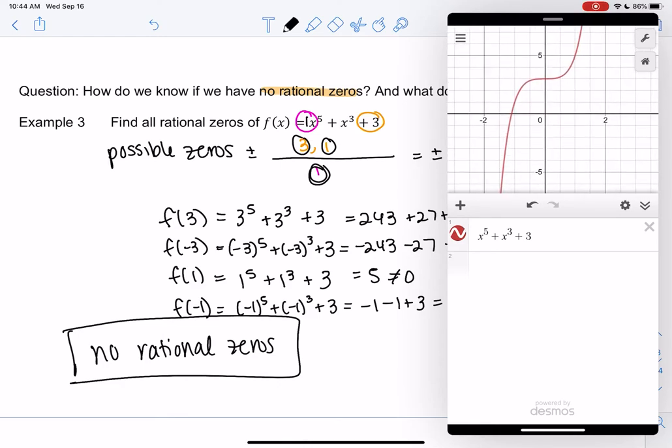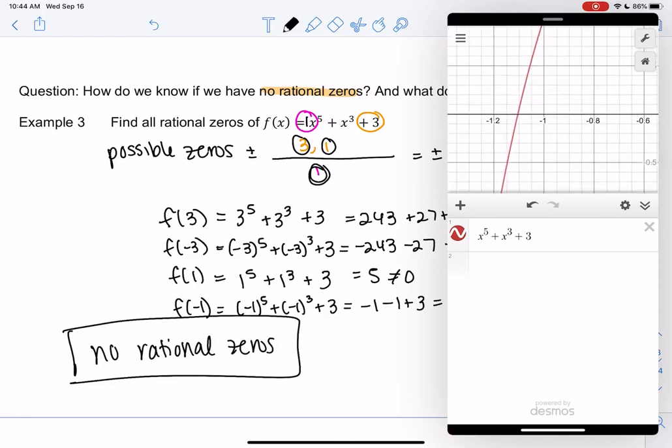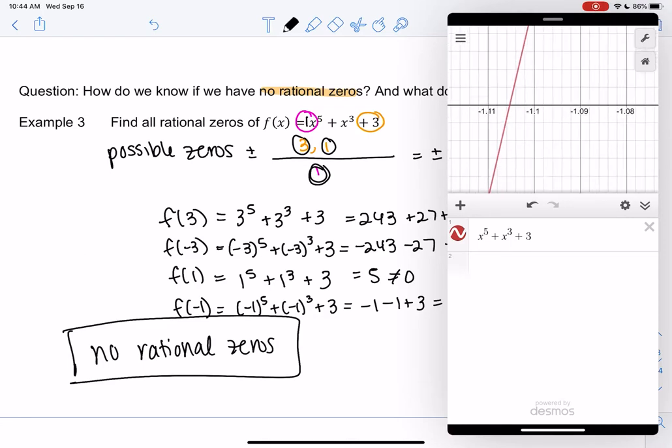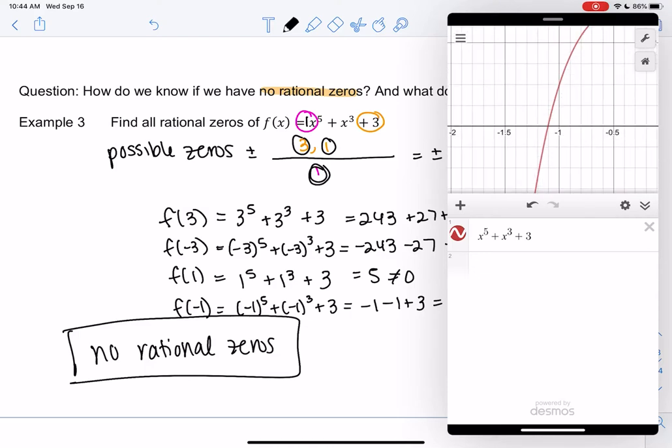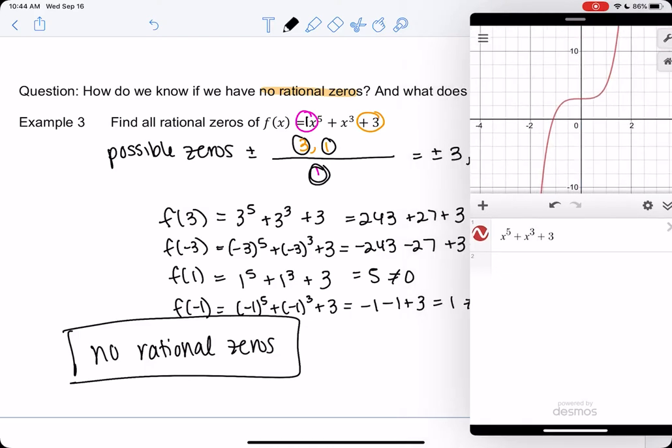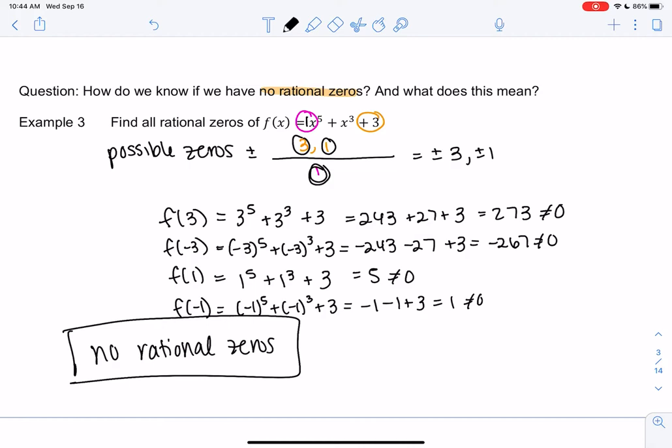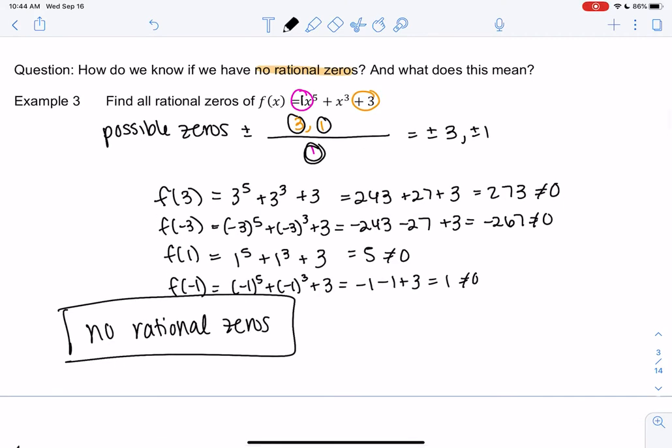And then the rest are probably complex zeros. This is not a rational number. It's not letting me click on it, but rational means it makes a fraction. So it's just one of those ugly decimals. So it just means it has zeros. The zeros are probably complex or irrational. And we'll figure out how to deal with those later.